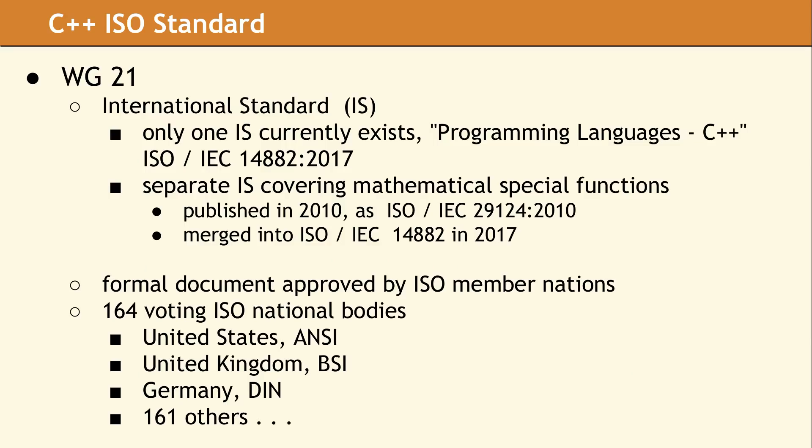The international standard is formally called ISO-IEC 14882, and was last updated and approved in 2017. A second international standard existed, which defined mathematical special functions. This IS is now obsolete, since the content was merged into the main C++ IS.